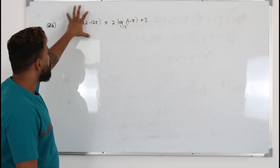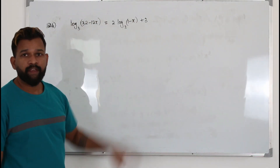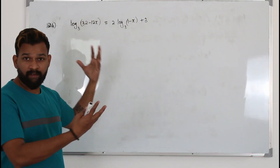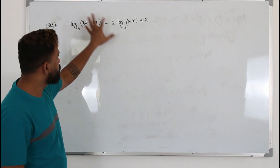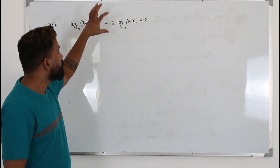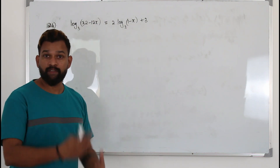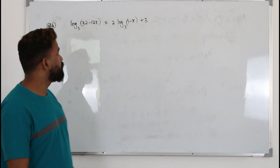Question number four is solving logarithmic equations. Pray that you will get questions like this because this is one of the chapters where you can score easily in P2.